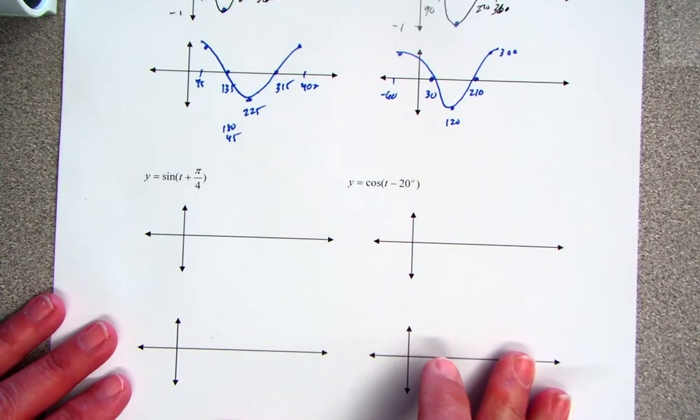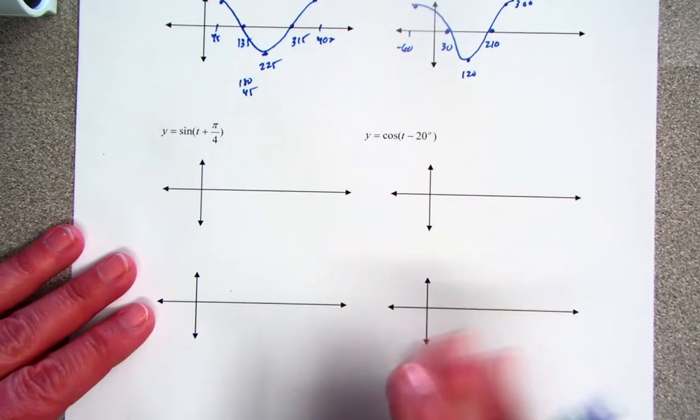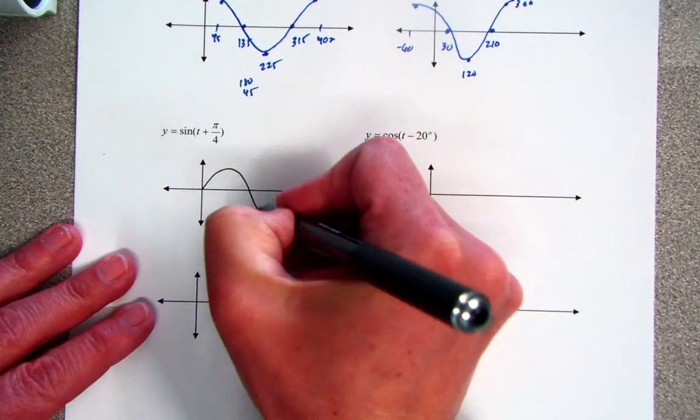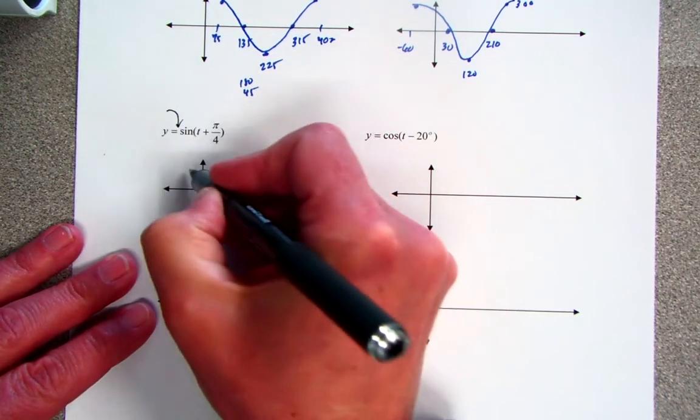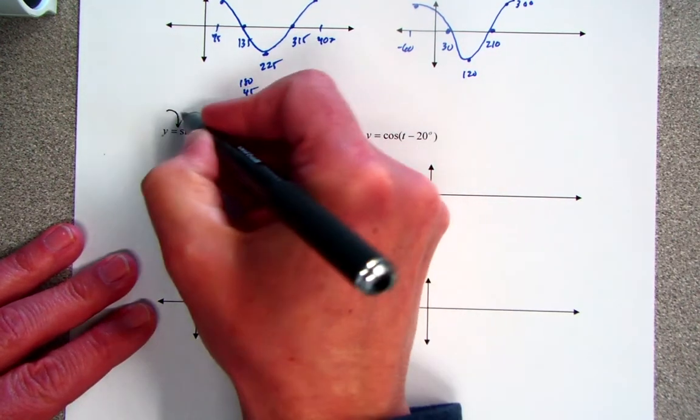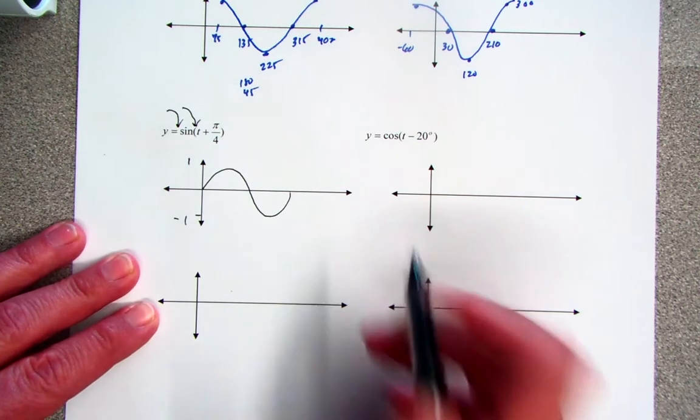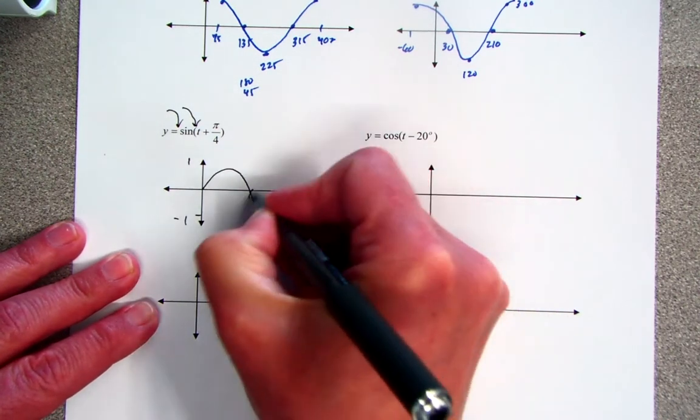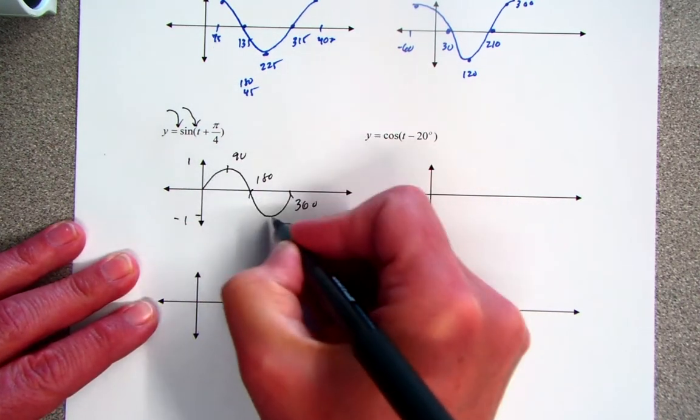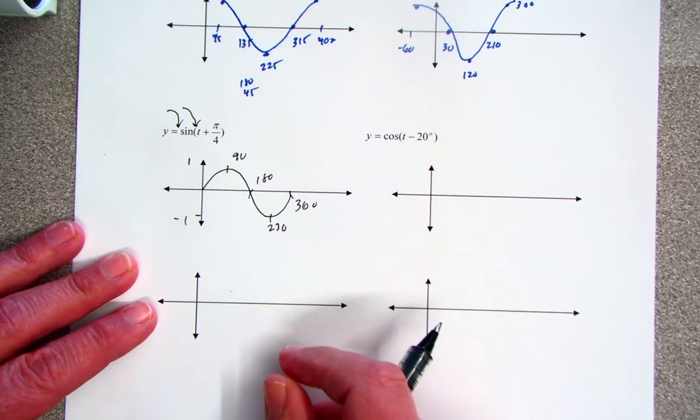The same thing works for sine. I'm going to get my normal sine graph. Notice the amplitude is still 1. There is no change in the length of the period. So again, I'm going to just keep it in the degrees. And those are all those important points around the unit circle.